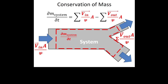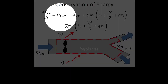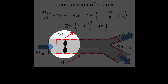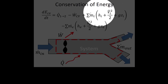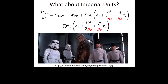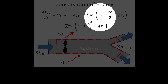Conservation of mass says that dm/dt — the rate at which mass is being stored or depleted inside our system — equals the sum of all mass flow rates in minus the sum of mass flow rates going out. One way to represent mass flow rates is area times velocity divided by specific volume. Conservation of energy for open systems is more complicated than for closed systems. This dE/dt term is the rate at which energy is being stored or depleted.